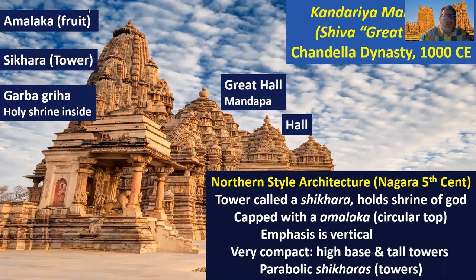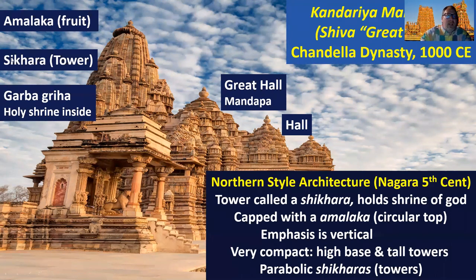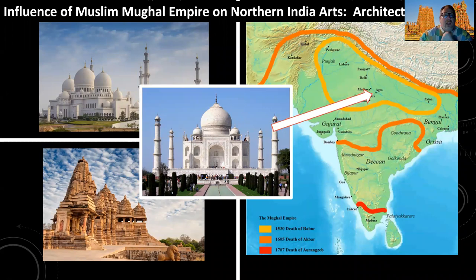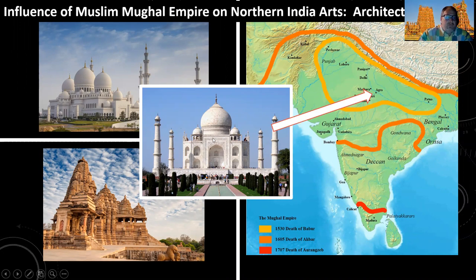This is one style of temple called the northern style of architecture — from the fifth century, called the Nagara. You have a tall tower called the Shikara, underneath which is the shrine of a god. It's capped with the Amalaka fruit. The emphasis is highly vertical and very compact with a high base and parabolic rather than pyramidal shapes on the towers. The northern style was influenced by Mughal emperors and the Muslims who took over large regions of India and installed things like the Taj Mahal — mosques used to be one building with that parabolic shape, and we see that influence in the northern style.